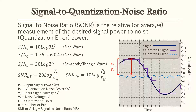Now here's where the rubber really meets the road: signal-to-noise ratio. This is a concept you're going to see more than once — there will be a whole lesson just on signal-to-noise ratio. Since there's quantization error, there's also going to be a signal-to-quantization-noise ratio. Signal-to-noise ratio is the relative or average measurement of the desired signal power to noise power, or in this case quantization error. The equations include two for the sine wave, one for the sawtooth or triangle wave, and two additional generic SNR equations common in PE references.